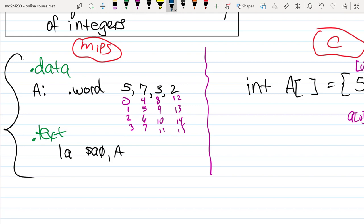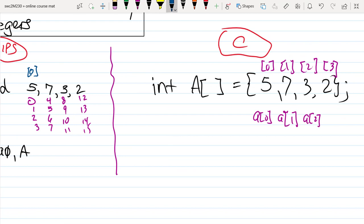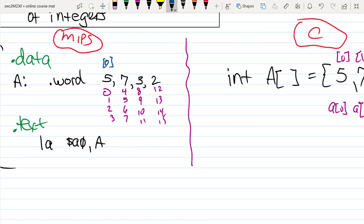So there we know the starting address of each one of those elements. Notice that for index array element sub 0, right, the 5, he starts at address 0. Index sub 1 starts at byte 4.